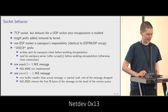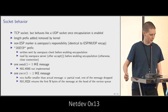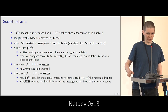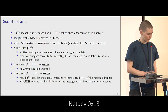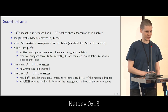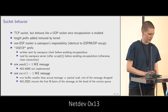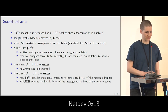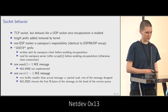It behaves like a UDP socket, meaning for one send, one IKE message will go out. I haven't implemented MSG_MORE or anything like that — it's just simple. On the receive side, one receive syscall will get one full IKE message from the socket. If the receive buffer is too small, the rest of the message will be dropped — that's also what UDP does. The MSG_TRUNC flag will return the first N bytes, and I'm not implementing peeking offset — that's unnecessary complexity at this point.